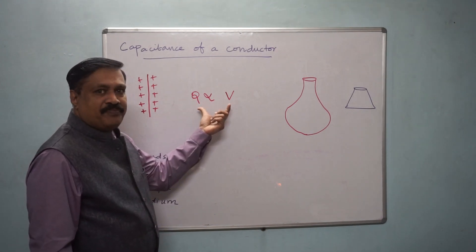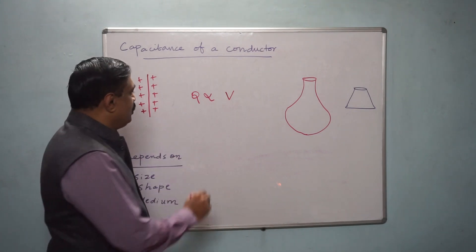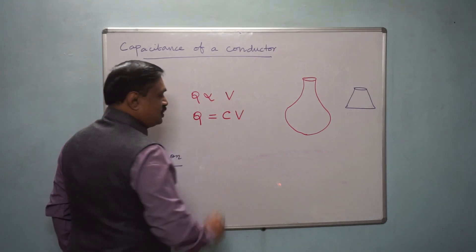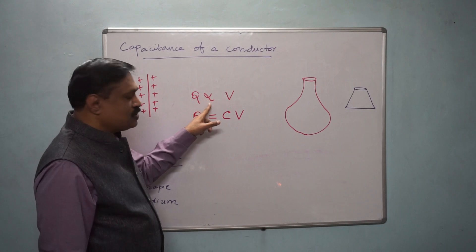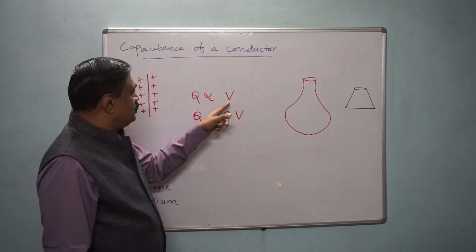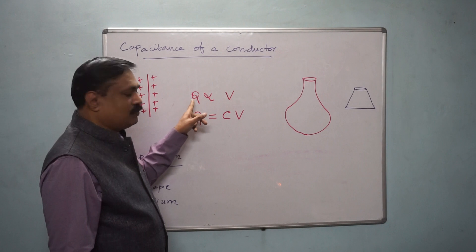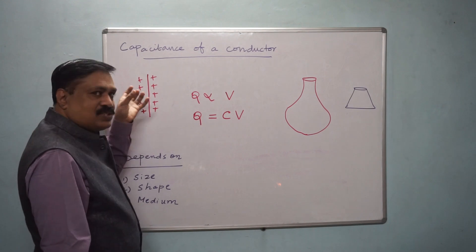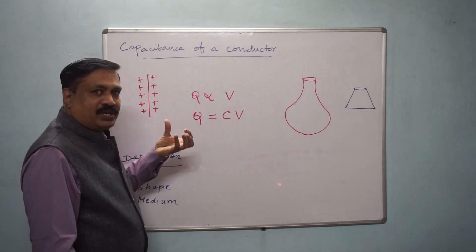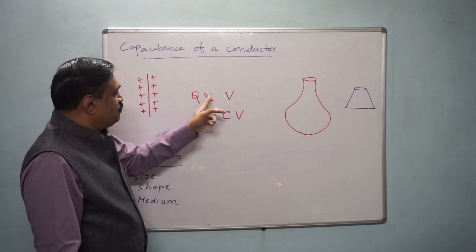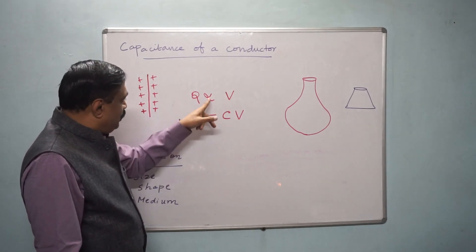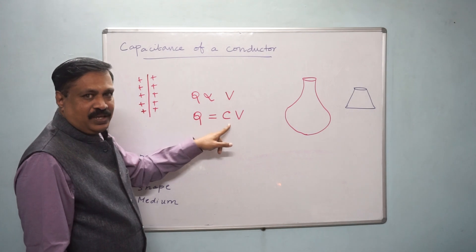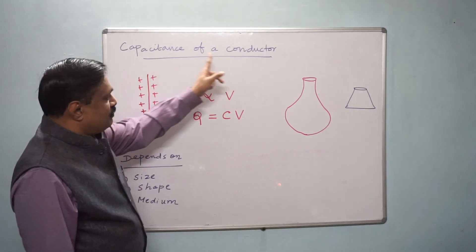Now it is a proportionality equation. If you want to convert it to a proper equation, we have to put some constant. That constant is called C. Q is proportional to V — that means the potential depends upon the amount of charge. We are converting into equation by putting the constant C, which is called capacitance of a conductor.